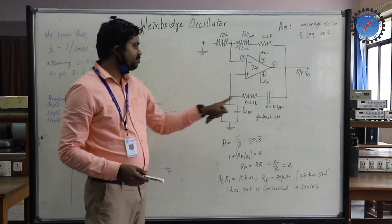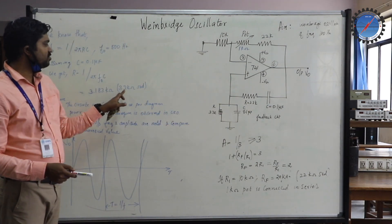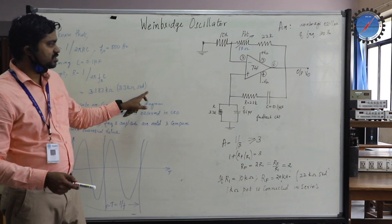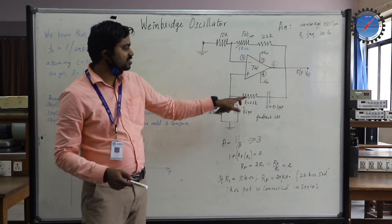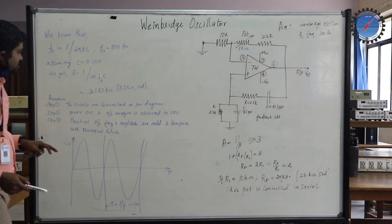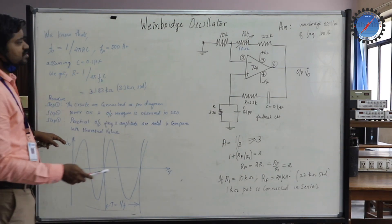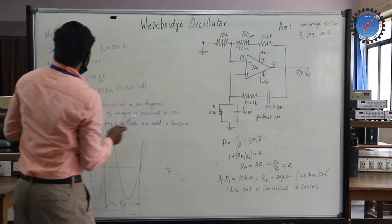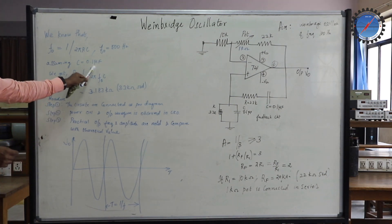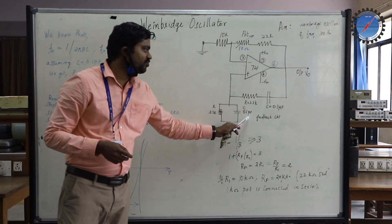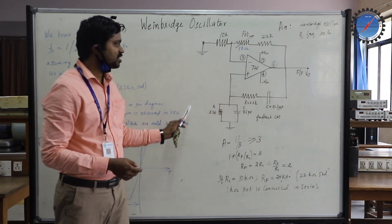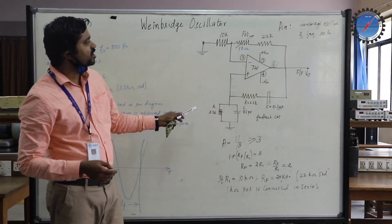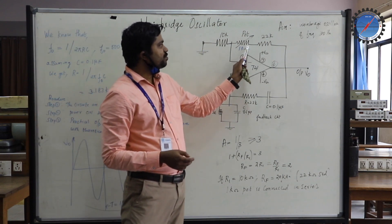Since 3.183 KHz is not available, we use 3.3KHz as the standard resistance. We connect 3.3KHz and 3.3KHz in series and parallel fashion. This C we have assumed as 0.1 microfarad, so 0.1 microfarad and 0.1 microfarad are connected in series. This particular configuration is the feedback circuit in the Wien bridge oscillator.